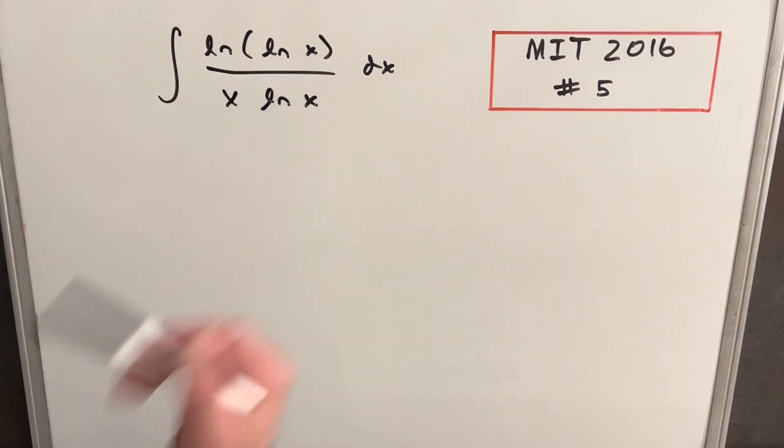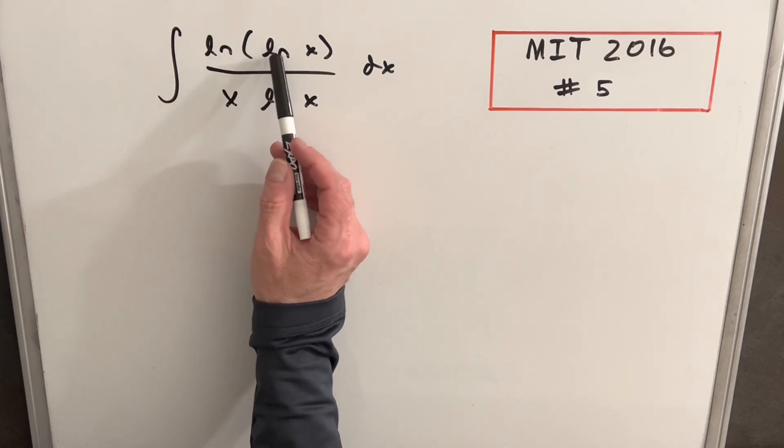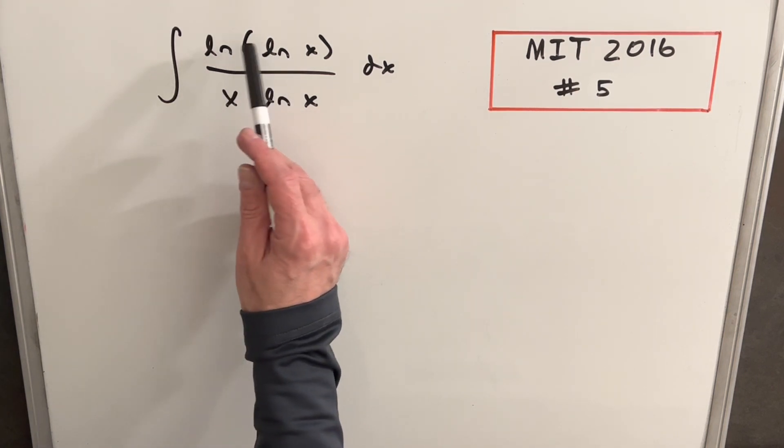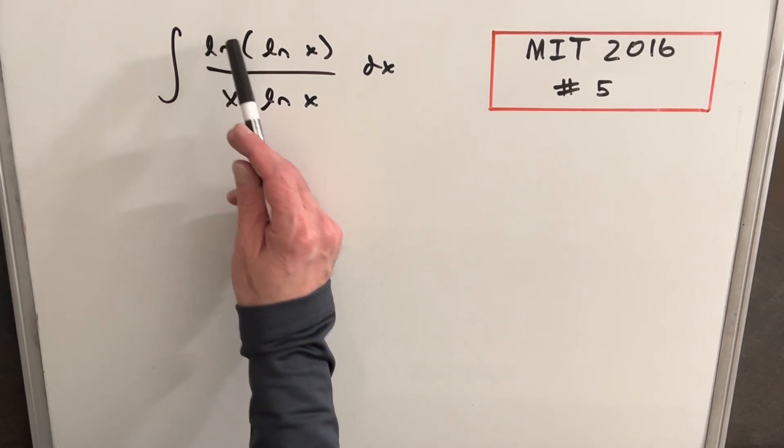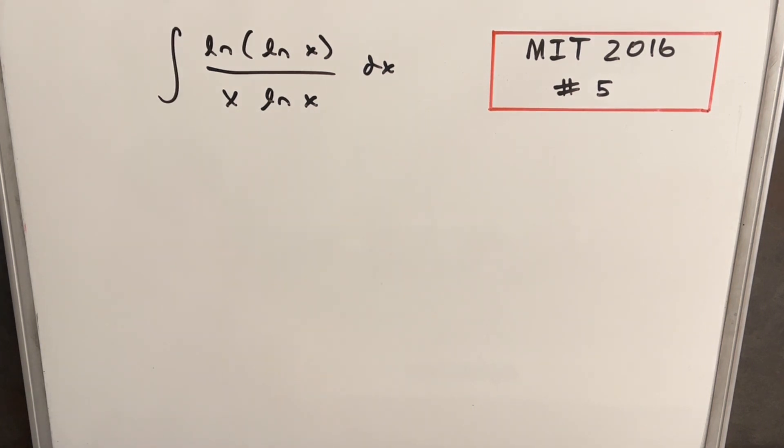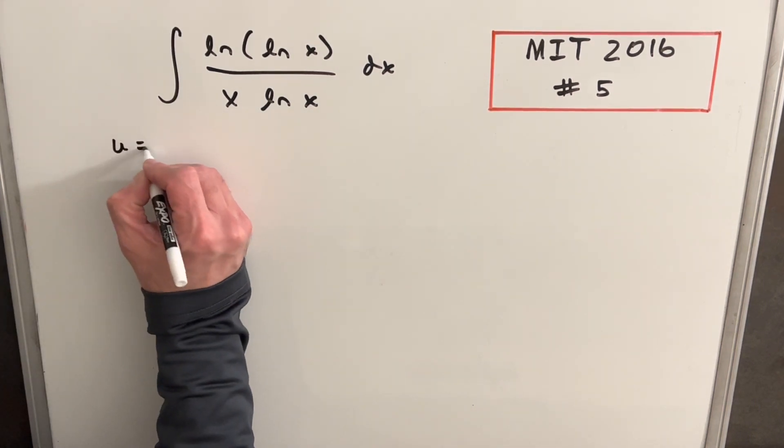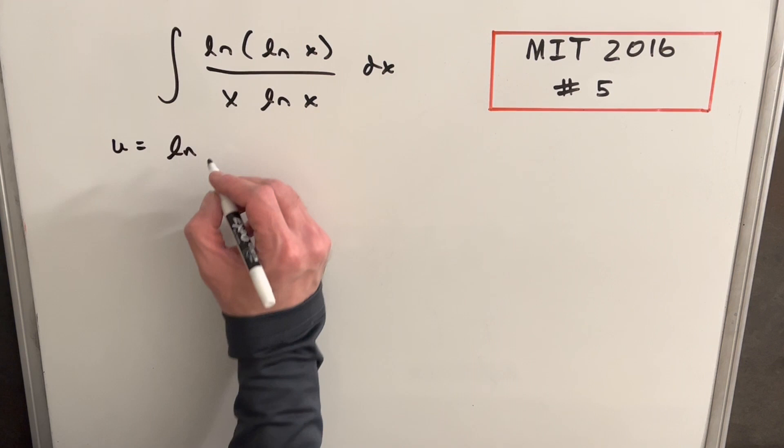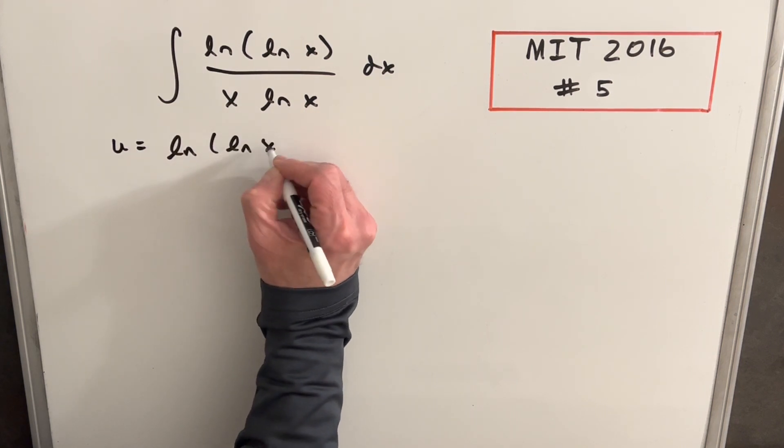We've got basically three ln's in here, but also with an ln within an ln. If you take the derivative of that, you're going to have an ln x in the denominator. What I'm going to do is set my u equal to this numerator, ln(ln x), and see what happens.